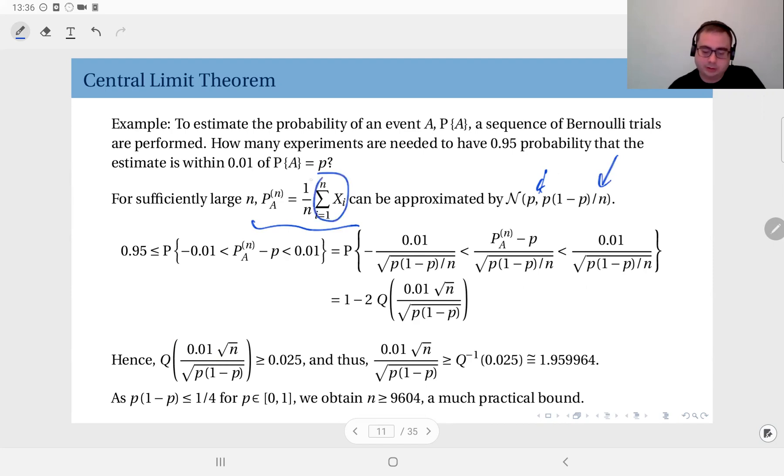Because the variance of xi's here is p times 1 minus p, and we have n of them iid. Add them up, the variance becomes n times p times 1-p.